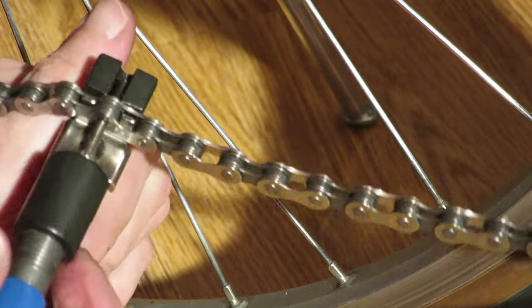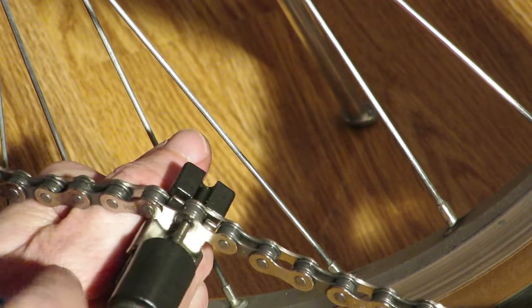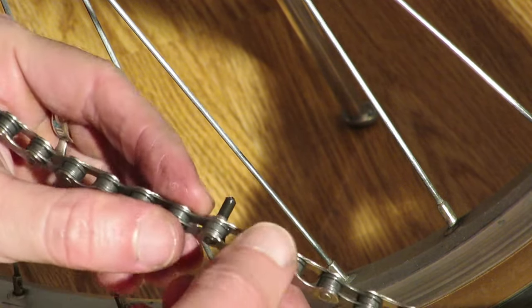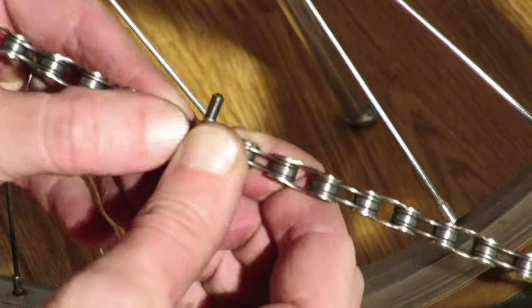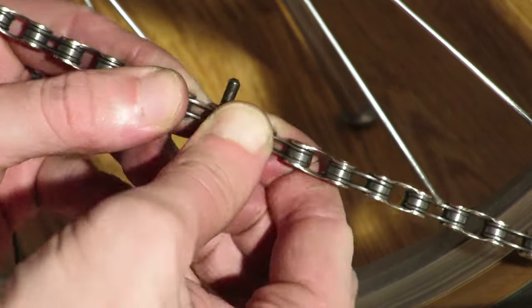When you feel the pin sits correctly, you can release the chain and test if the chain moves freely. You can do so by bending the chain in its natural direction.